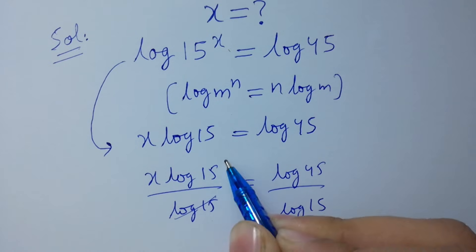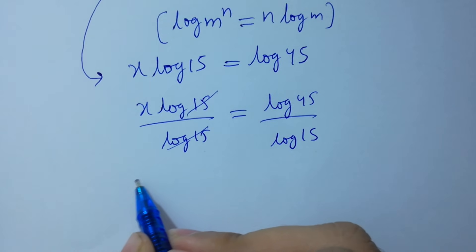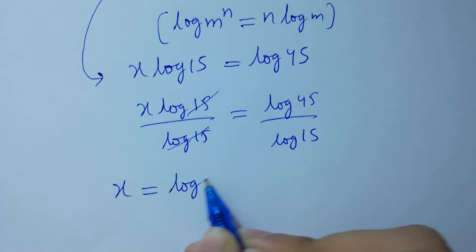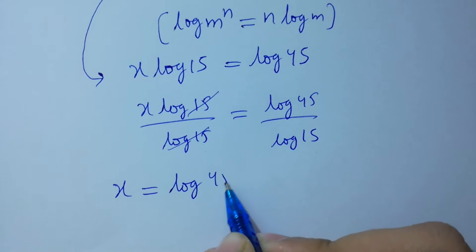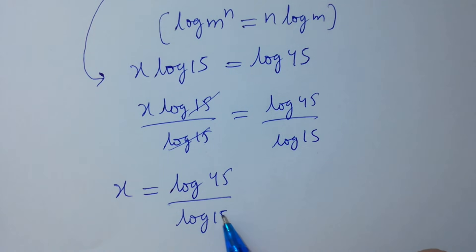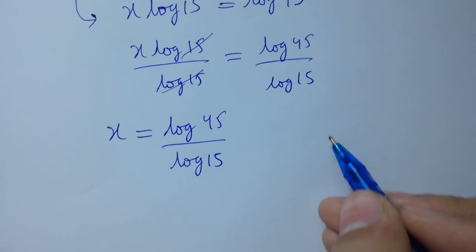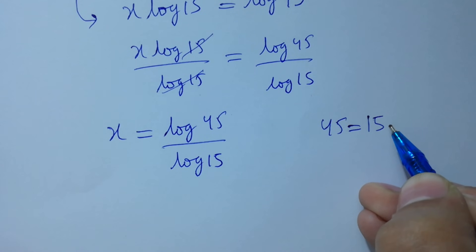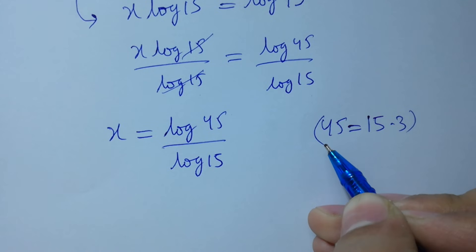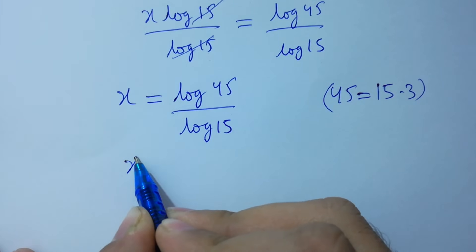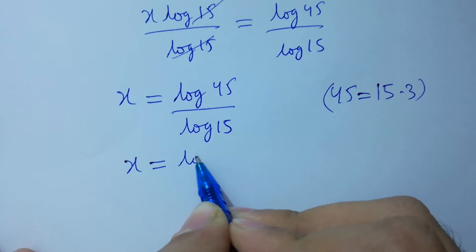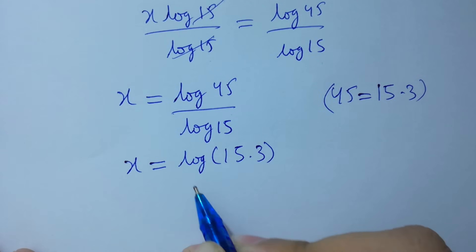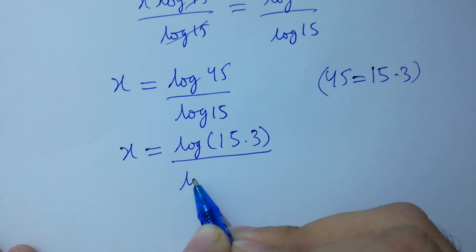Log 15 and log 15 will be cancelled. We have x equal to log 45 over log 15. Since 45 equals 15 times 3, so it can be written as x equal to log of 15 times 3, over log 15.